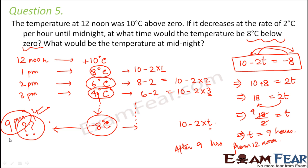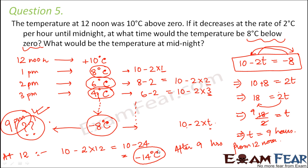What would be the temperature at midnight? At 12 midnight, the temperature would be 10 minus 2 times 12, which is 10 minus 24, equal to minus 14 degrees Celsius. Many might feel this was a complicated process, but the purpose was to show how equations are used to solve problems. You could also simply continue the table from 1 pm, 2 pm, and so on up to 9 pm.